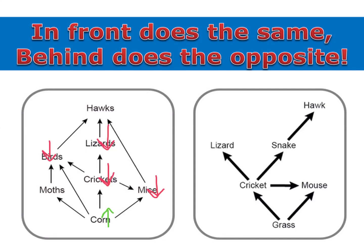In our second food web, let's say there is an increase in the snake population. In front would do the same — more snakes means more food for hawks, so that would cause an increase in the hawk population. But more snakes would also mean more crickets being eaten, so behind would do the opposite, and the cricket population would decrease.